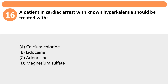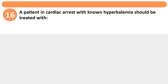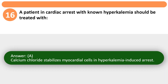A patient in cardiac arrest with known hyperkalemia should be treated with: A. Calcium chloride. B. Lidocaine. C. Adenosine. D. Magnesium sulfate. Answer: A. Calcium chloride stabilizes myocardial cells in hyperkalemia-induced arrest.